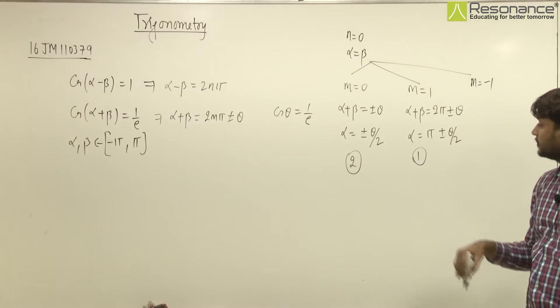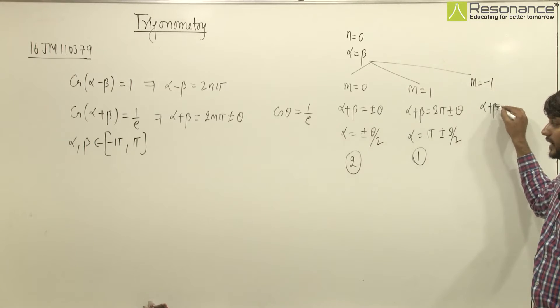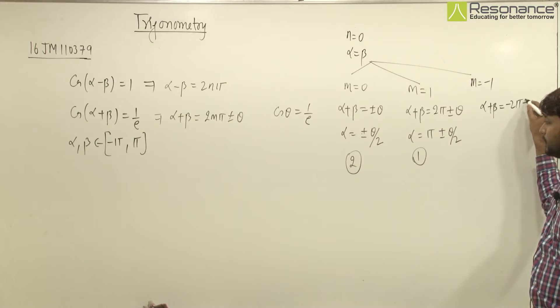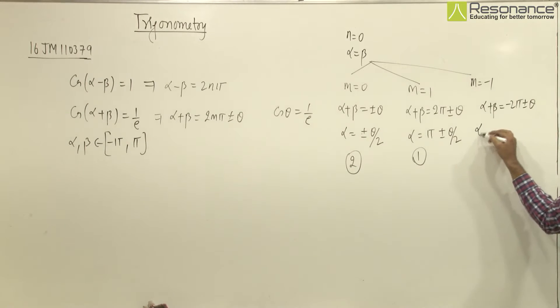Now we change m's value to minus 1. In this case we get alpha plus beta will be equal to minus 2 pi plus minus theta. If we calculate alpha's value in this case, we get minus pi plus minus theta by 2. In this case which sign will we consider? Plus sign. So in this case we get 1 ordered pair.